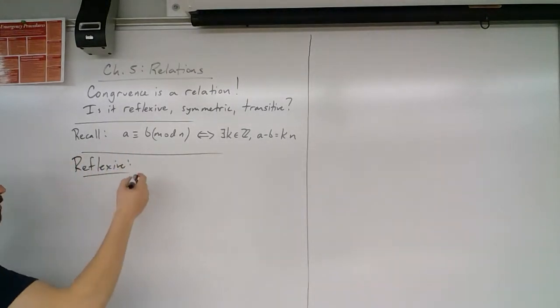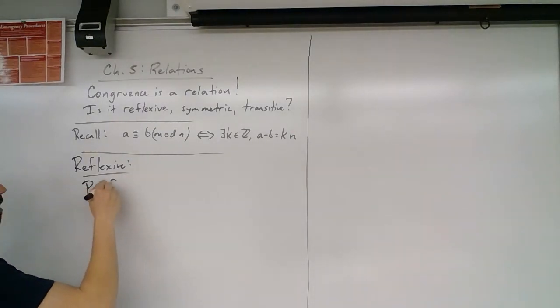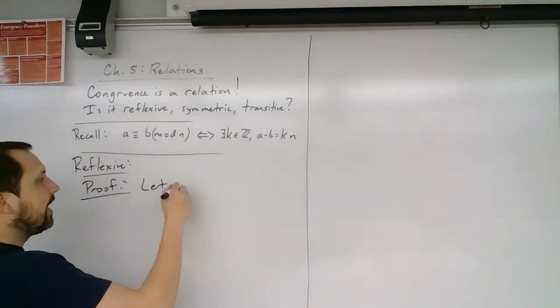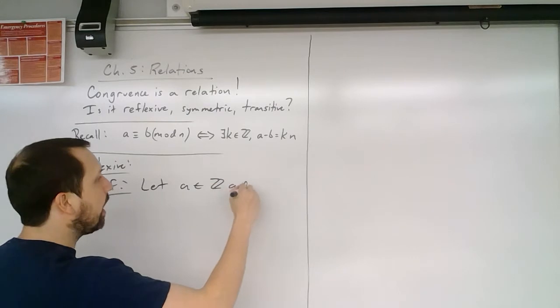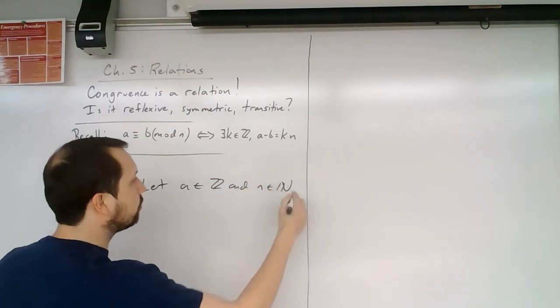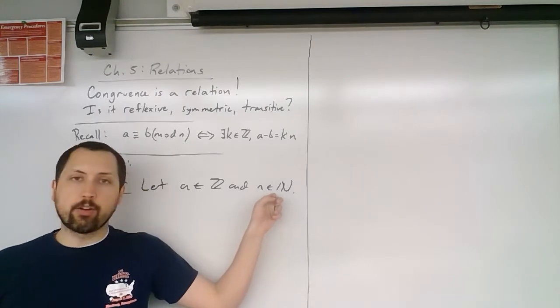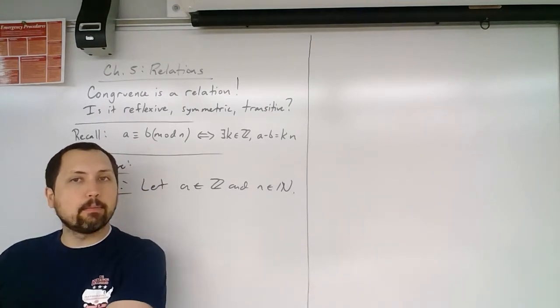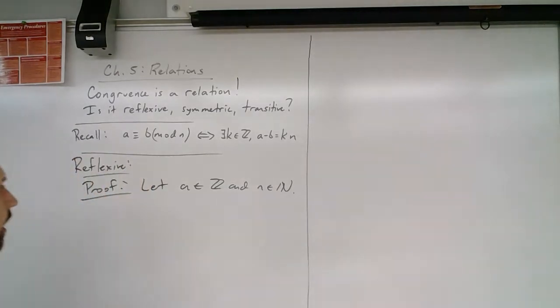So reflexive, what we'd like to do is we will do a proof of this. So we can say, let a be an element of the integers and n be a natural number. We're starting out with an arbitrary integer and an arbitrary natural number. So we're saying that for any integer and any modulus, we're going to show that a is congruent to a.